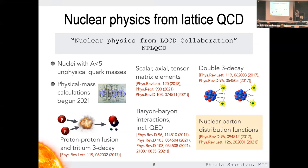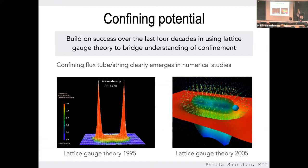Regarding the decay to a photon — the photon is put in as an operator, so you're essentially calculating matrix elements of local operators between the np and deuteron states.